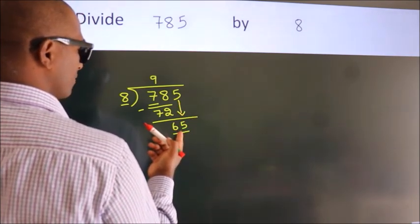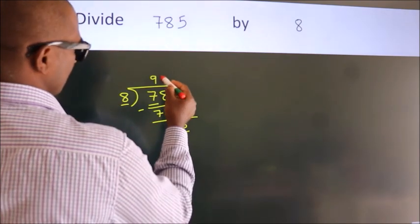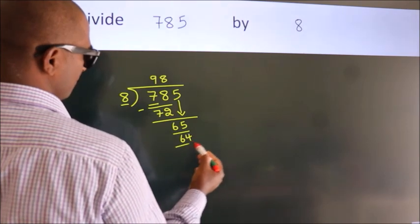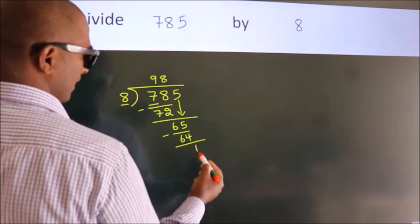A number close to 65 in 8 table is 8 eights, 64. Now, we subtract. We get 1.